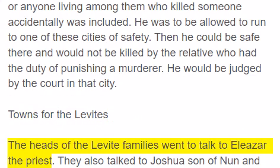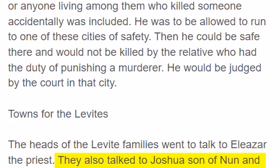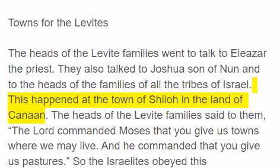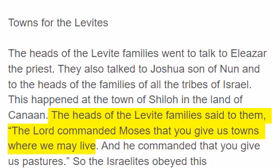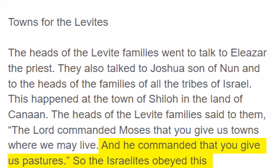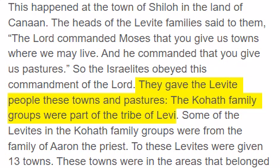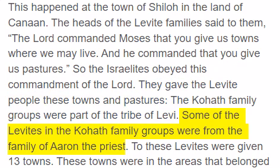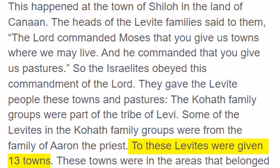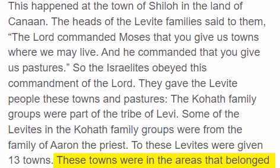Towns for the Levites. The heads of the Levite families went to talk to Eliezer the priest. They also talked to Joshua son of Nun and to the heads of the families of all the tribes of Israel. This happened at the town of Shiloh in the land of Canaan. They said, The Lord commanded Moses that you give us towns where we may live, and he commanded that you give us pastures. So the Israelites obeyed this commandment of the Lord. They gave the Levite people these towns and pastures. The Kohat family groups were part of the tribe of Levi. Some of the Levites in the Kohat family groups were from the family of Aaron the priest. To these Levites were given thirteen towns.